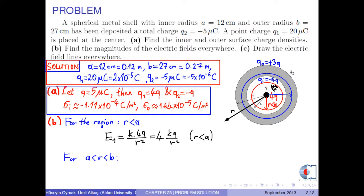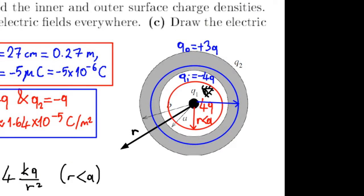For the region where R is greater than A and less than B, that is inside the metal shell, electric field is zero. Because if we look at the inside, we don't see any charge there.